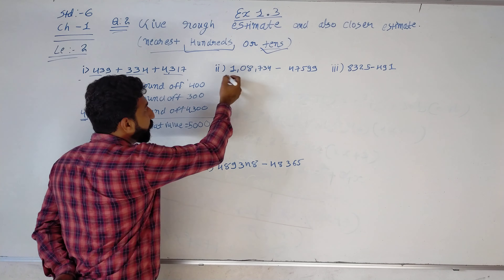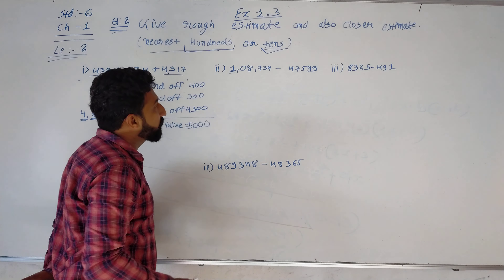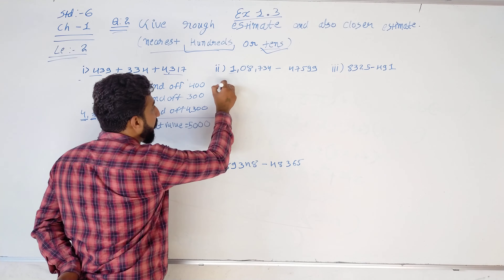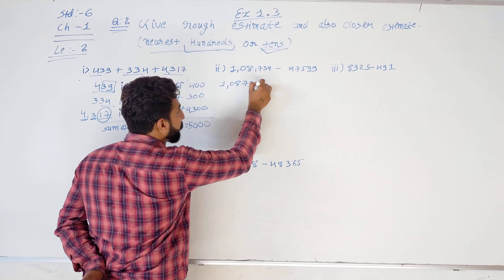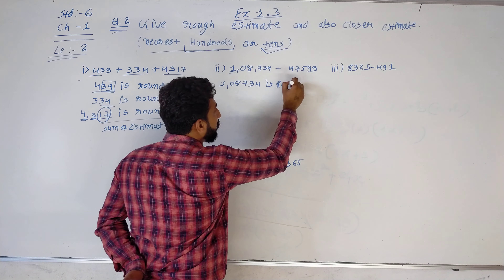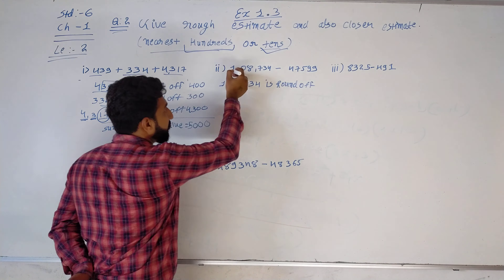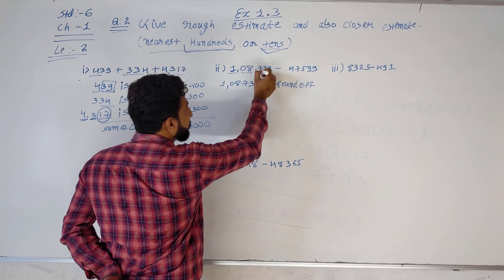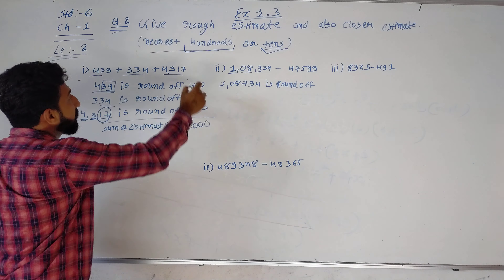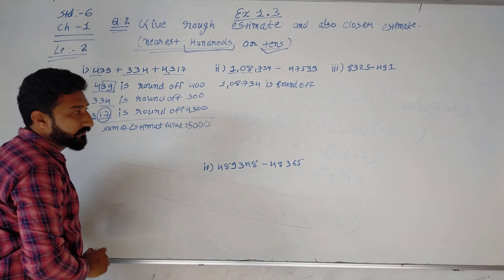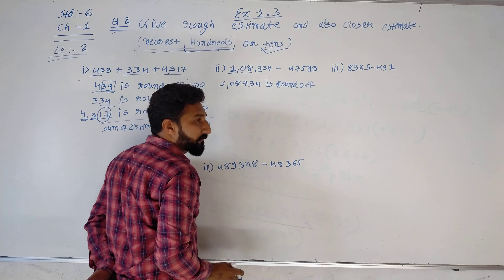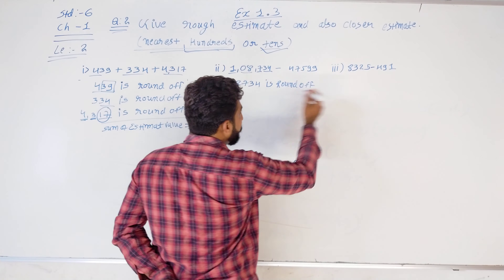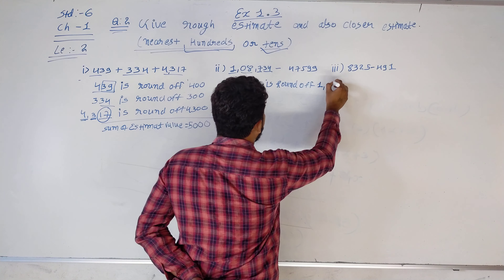Next one: 18734. Now 18734 — we see 700, because in the question we find the nearest 100. Here 700, and 34 of 700 stays near 700, not 800. So it will be 18700.